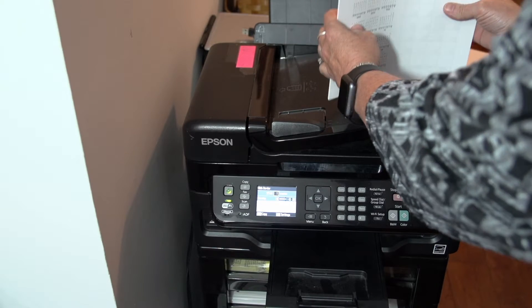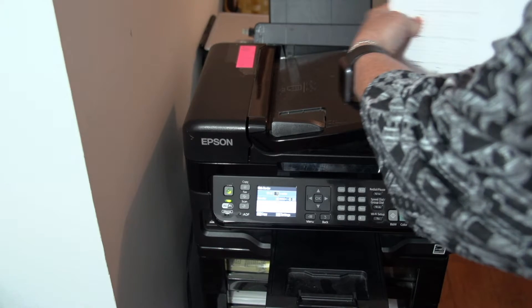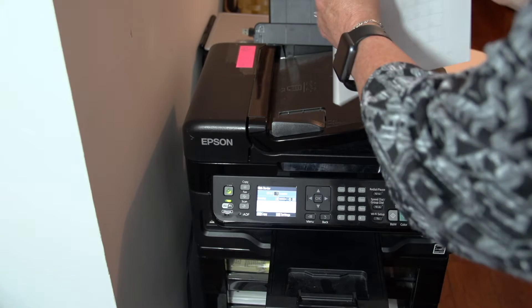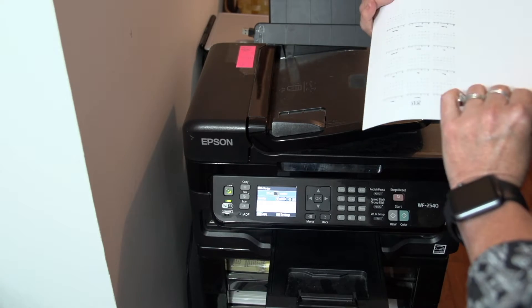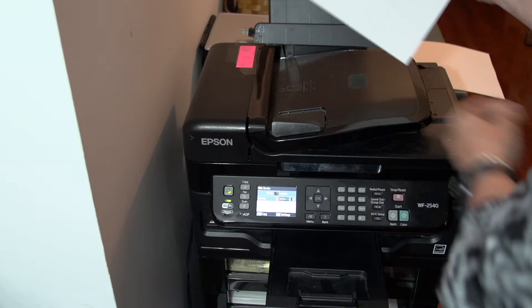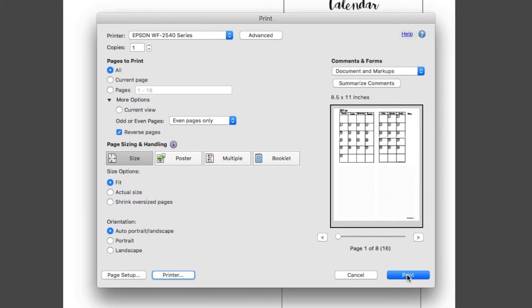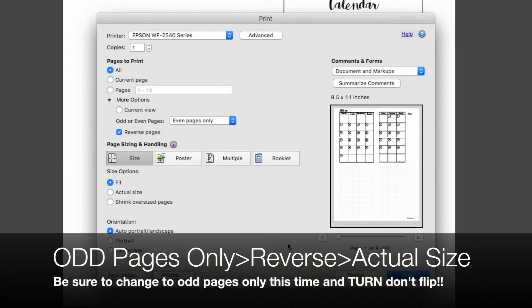This is the tricky part. Do not flip it. Turn it, like that. Put it back in the printer the way it came out. Then go back and choose print odd pages only, and reverse again. Actual size.